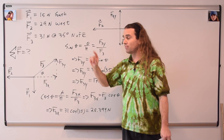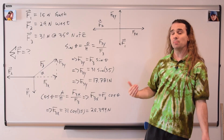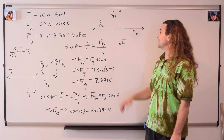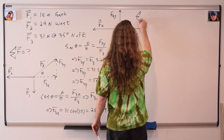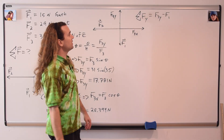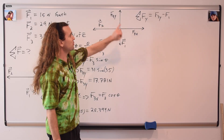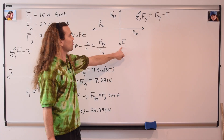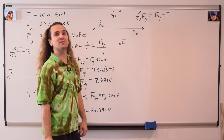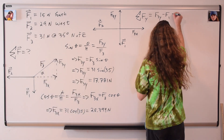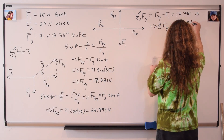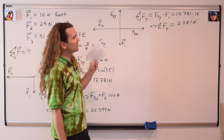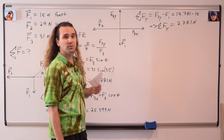Now, considering we're trying to solve for the net force, we should sum the forces in both directions. Let's start with summing the forces in the y direction. The net force in the y direction is equal to force three in the y direction minus force one. Force three in the y direction is positive because it's up; force one is negative because it's down. Substituting in values: 17.781 minus 15 gives us a net force in the y direction of 2.781 newtons.